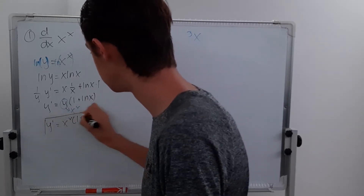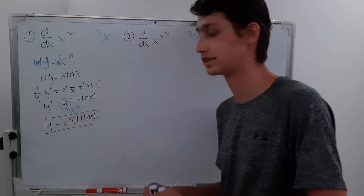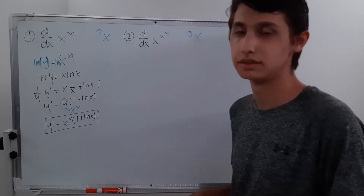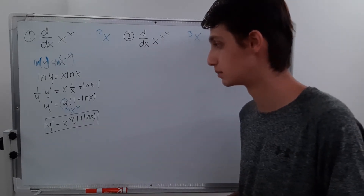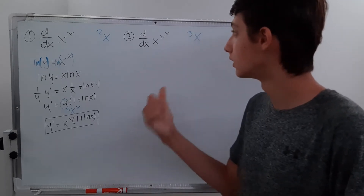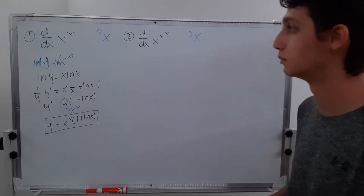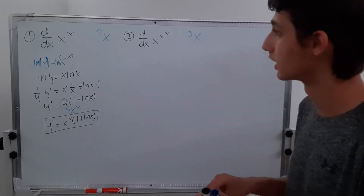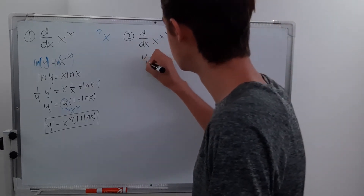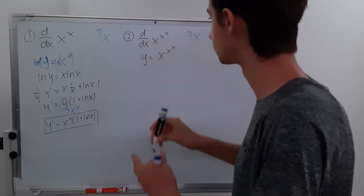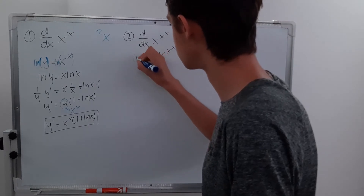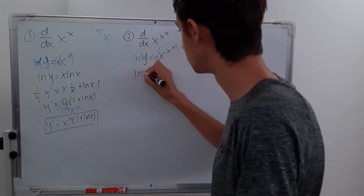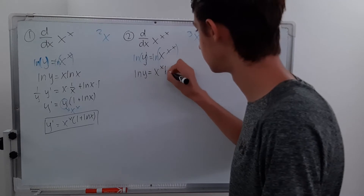This is the standard form that the derivative of x to the x is written in. Usually you don't distribute — you can if you want, but there's no reason to. So let's do the third tetration. We're going to set y equal to x to the x to the x, and take the natural log of both sides. We end up with ln y equal to x to the x times ln x.